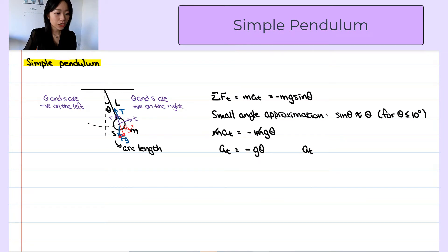And tangential acceleration is the second derivative of the arc length. And remember from mechanics, theta is arc length divided by the radius of the circle.